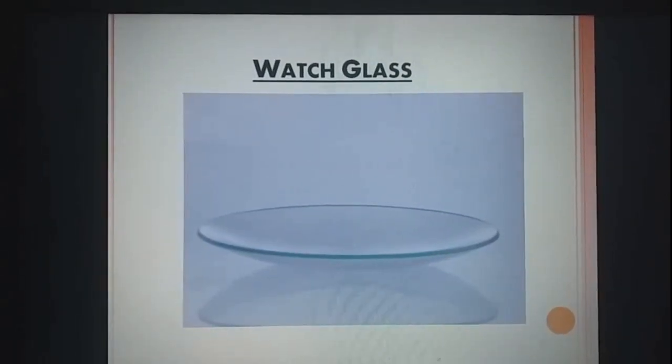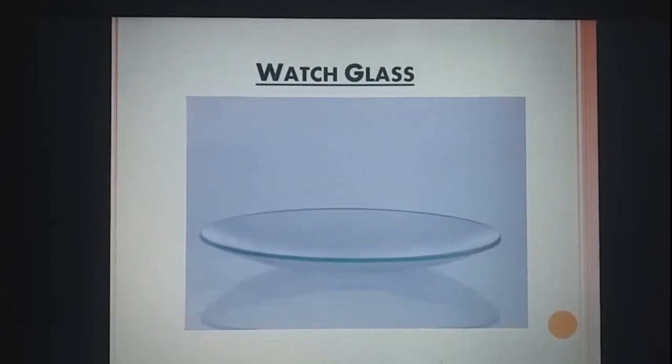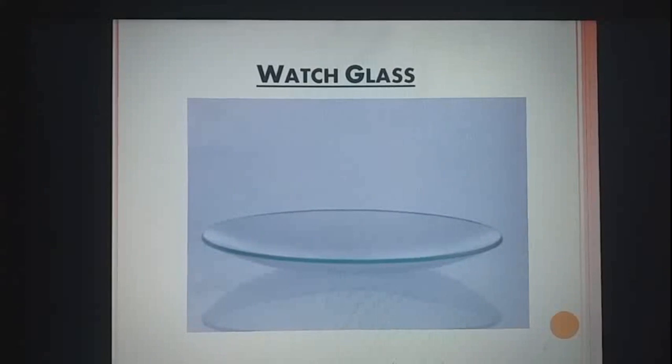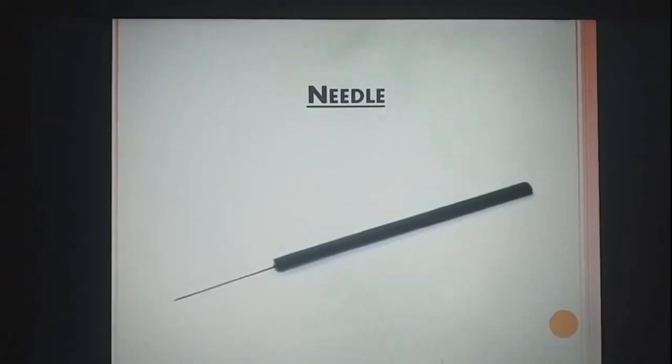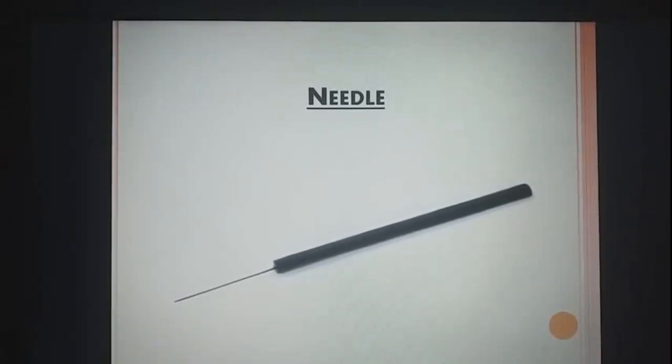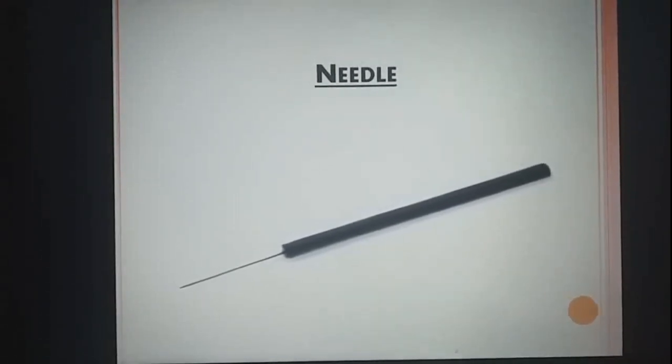Watch glass. Watch glass is a circular piece of glass used in lab as a surface to evaporate a liquid to hold solids while being wet. Needle. It is an important laboratory equipment used in the field of microbiology to transfer the living microorganism.